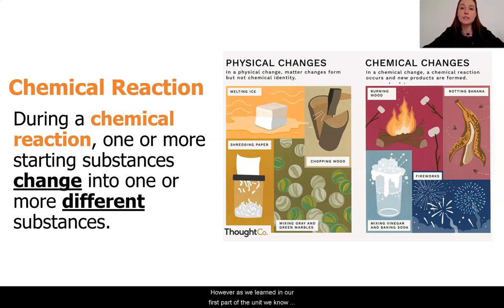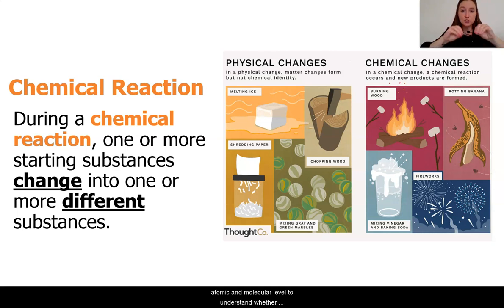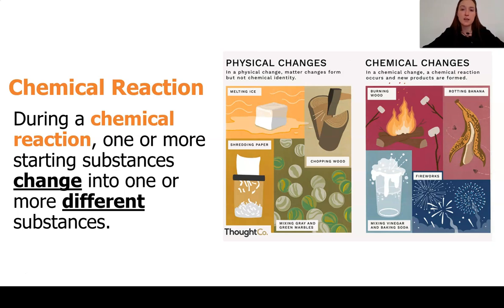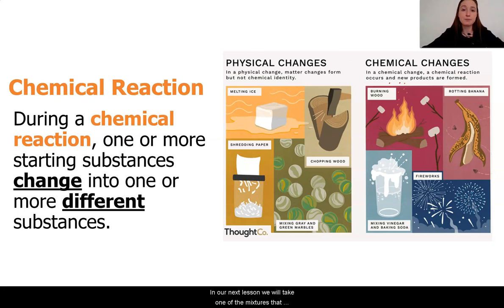However, as we learned in our first part of the unit, we know that we really need to look at the atomic and molecular level to understand whether substances are the same or different. It's all about the repeating atom or repeating atom group. In our next lesson, we will take one of the mixtures that we did today and look at it in the digital model to really see what was going on when we mixed those substances together.